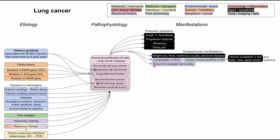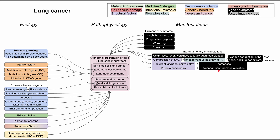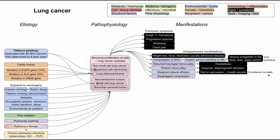You can have a mass effect on the recurrent laryngeal nerve, causing recurrent laryngeal nerve palsy, which leads to hoarseness. A phrenic nerve palsy from mass effect can result in dyspnea and diaphragmatic elevation visible on chest x-ray. A malignant pleural effusion in severe cases causes dullness to percussion and decreased breath sounds, and is often considered a sign of incurable disease.